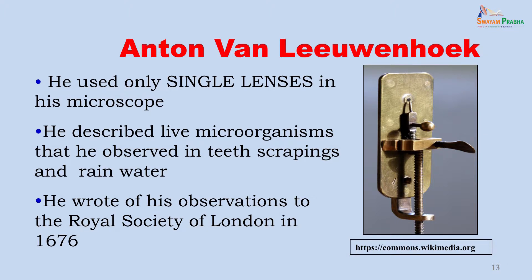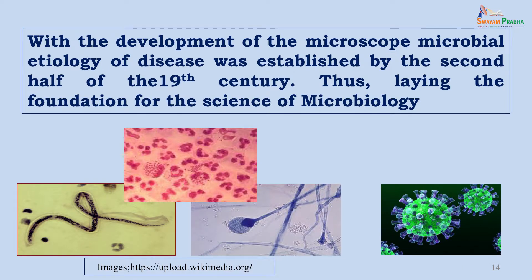Leeuwenhoek's observations were presented to the Royal Society of London in 1676. With the development of these microscopes and further versions, the microbial etiology of disease was established in the second half of the 19th century, laying the foundation of the science of microbiology. Bacteria, parasites, fungi, and viruses were described by various people over the years.